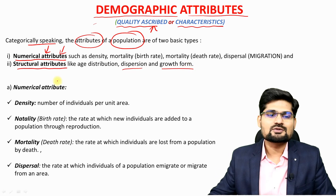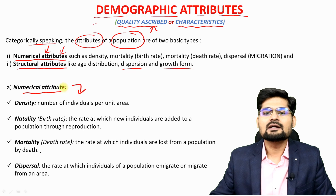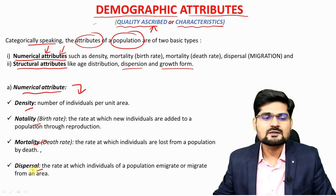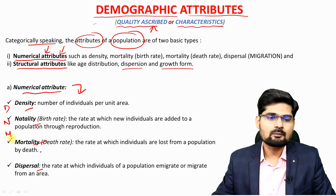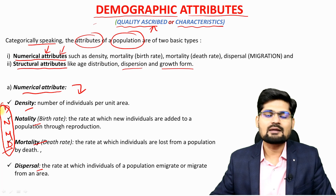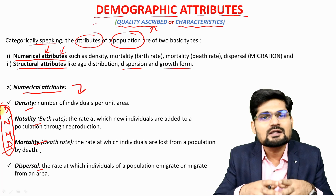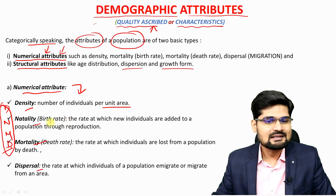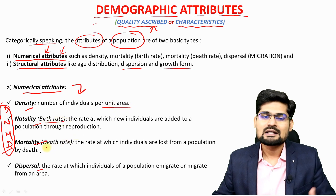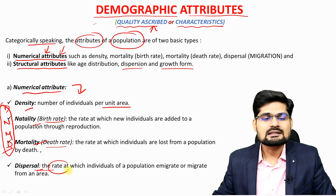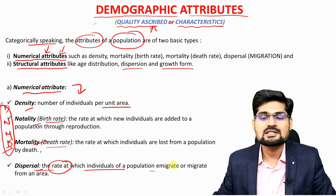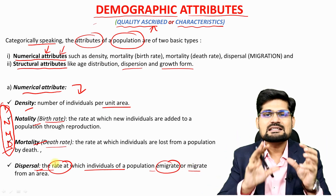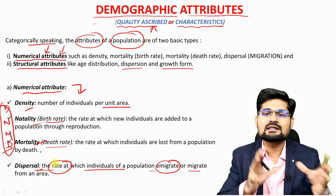The first important thing is to learn about the numerical attributes of the demographic attribute segment. These are density, natality, mortality and dispersal — remember the short form DNMD. This is the numerical or quantitative part of demographic attributes. Density is individuals per unit area, natality is the birth rate, mortality is the death rate, and dispersal is the rate at which individuals move through immigration or emigration into or from an area.